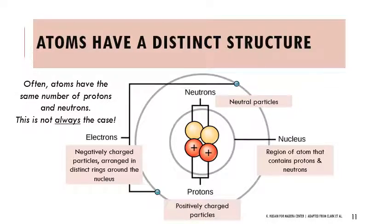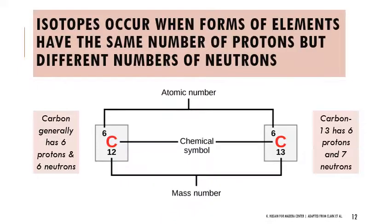Protons remain very consistent. Oftentimes atoms have the same number of protons and neutrons, but that's not always the case. Isotopes occur when you have two forms of the same element with the same number of protons but different numbers of neutrons. One example is carbon-12, which is normal elemental carbon — it has six protons and six neutrons. But it has an isotope, carbon-13 (written as 13C), that has six protons and seven neutrons. The atomic mass number changes based on the sum of protons and neutrons.